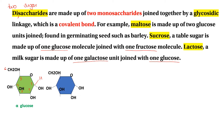Let's look at alpha-glucose. The carbon numbering is 1, 2, 3, 4, 5, 6. The first position has an OH group. The second one is hydrogen. In alpha-glucose, carbon number 1 and carbon number 4 are key positions. The second one has an OH group — hydrogen and oxygen.